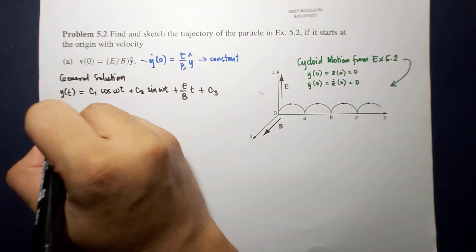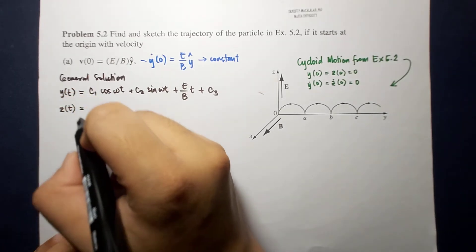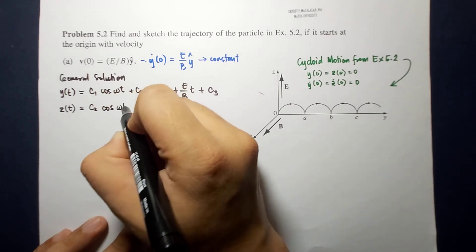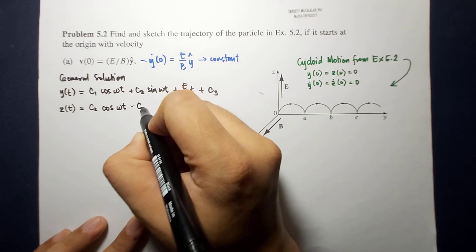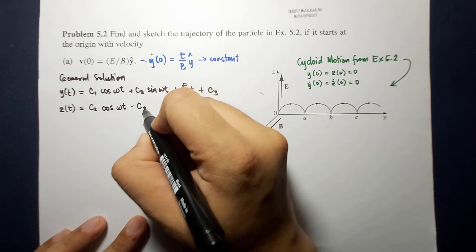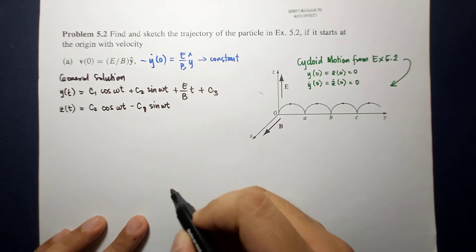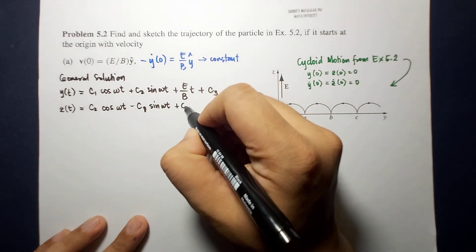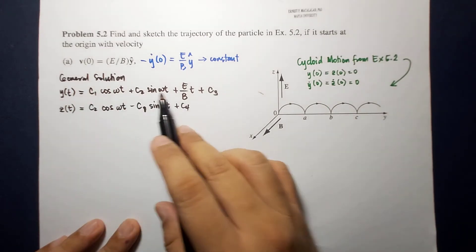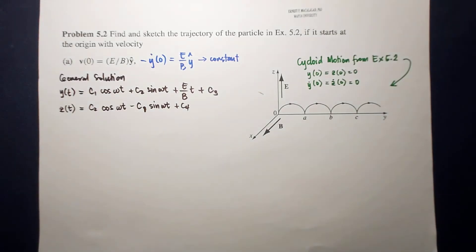On the other hand, along the z direction, the particle moves with this expression: c2 cosine omega t minus c1 sine omega t plus c4. You'll notice that c1, c2, c3, and c4 are all constants and they are determined by our initial conditions.